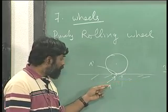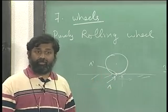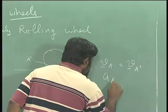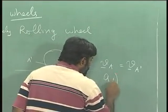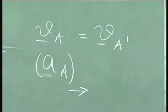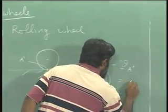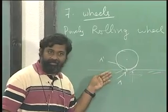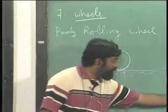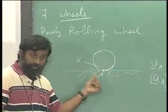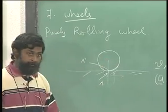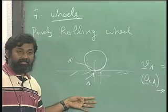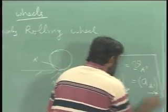The velocity in the vertical direction depends on the surface velocity. If it is a rigid fixed surface, velocity in the vertical direction is zero. If the surface is moving, then the velocities of the two contact points match to equal the surface velocity. Not only velocity, this also applies to acceleration. The acceleration of A, specifically the component perpendicular to the contact surface, is the same as the acceleration of A prime in that direction.